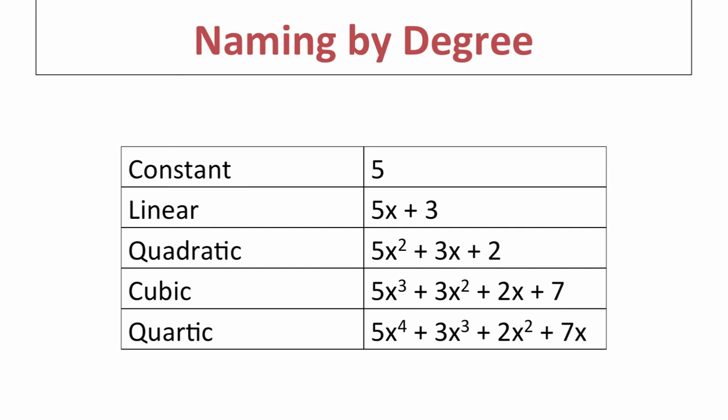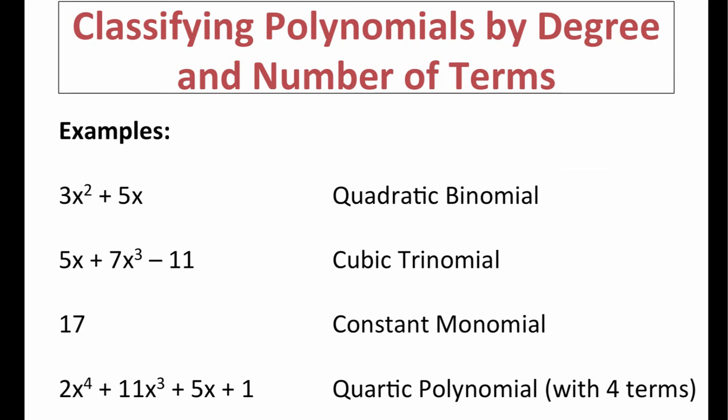That's the vocabulary you'll need for this topic. Now let's look at some examples to achieve our goal of classifying polynomials based on degree and number of terms. The first example, 3x squared plus 5x, is considered quadratic because the highest exponent is 2, and binomial because we have two terms separated by a plus sign.